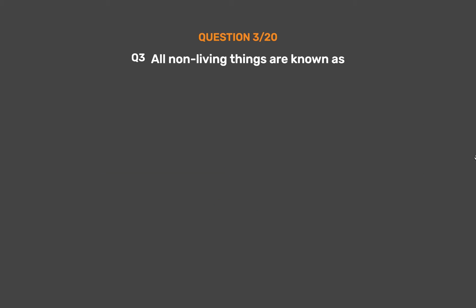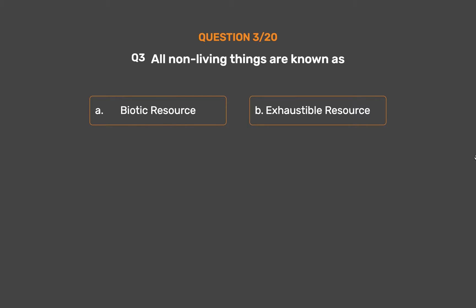Question number 3. All non-living things are known as: Option A: Biotic resource. Option B: Exhaustible resource. Option C: Abiotic resource. Option D: Human resource.